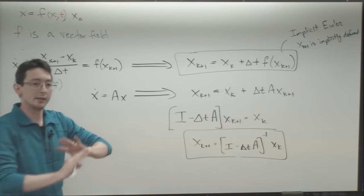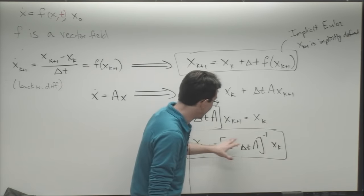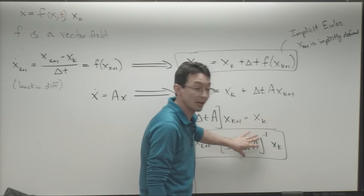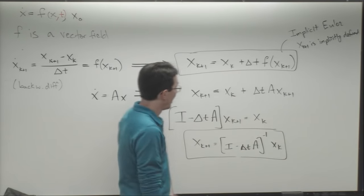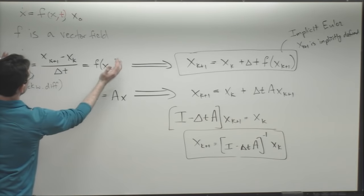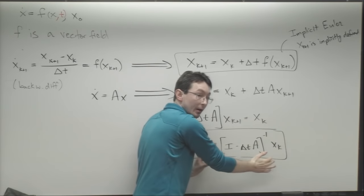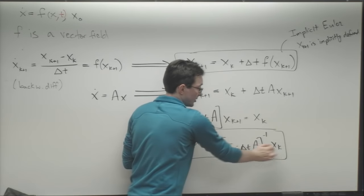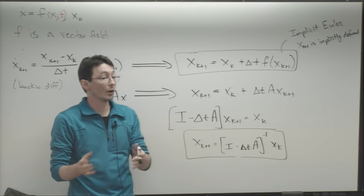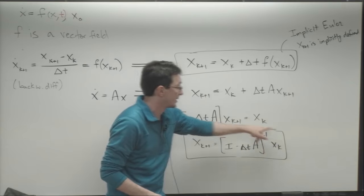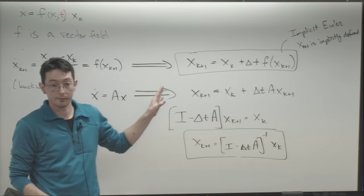I'm not claiming these are great methods of numerical integration, but they're important because we can directly analyze whether they're stable and what their error is for systems where we know the answer, like x dot equals Ax. This basic idea of using a finite difference derivative to cook up an iteration scheme for our trajectory is the basis of all numerical integration. Really good numerical integrators like ODE45 just find a fancy formula for x k+1 in terms of x k based on very similar ideas.